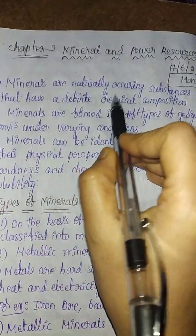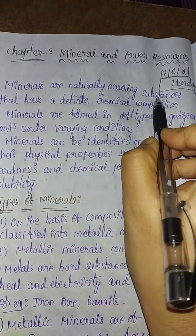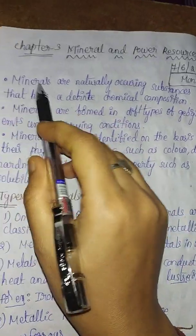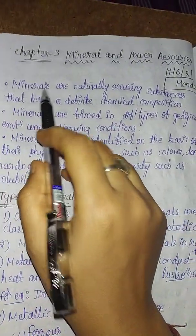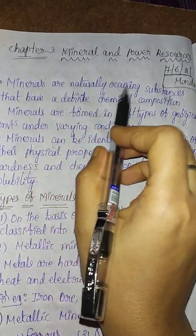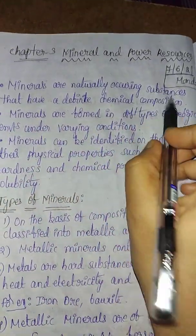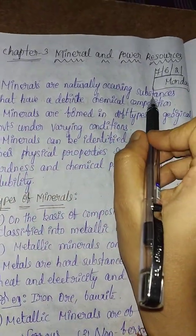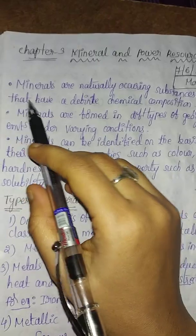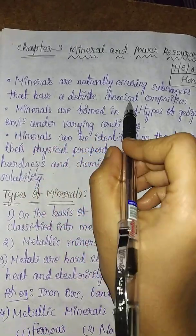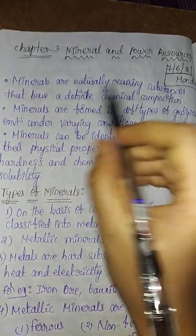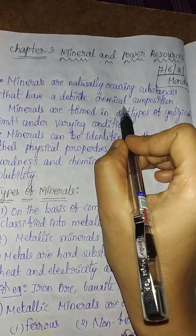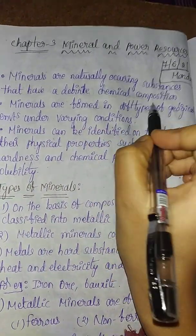Minerals are naturally occurring substances that have a definite chemical composition. Chemical composition is a chemical source.